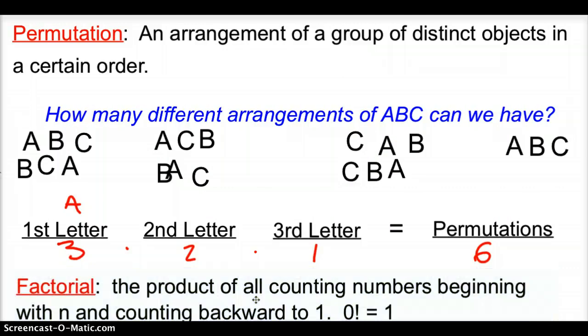That also leads us into another vocab word, which is a factorial, which is the product of all counting numbers beginning with n and counting backwards to 1. See this little exclamation mark? That is known as a factorial. A 0 factorial is 1, but we could also have 7 factorial, which would be 7 times 6 times 5 times 4 times 3 times 2 times 1. 7 factorial would be represented like that.